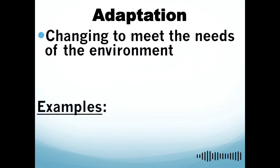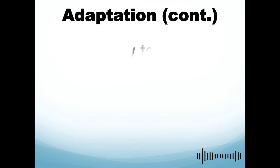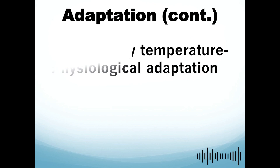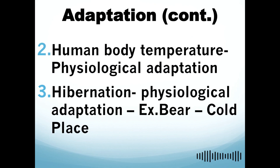The next characteristic is adaptation — changing to meet the needs of the environment. One example is bird migration, which is a behavioral adaptation. Another is human body temperature regulation, which is a physiological adaptation. The third example is hibernation, also a physiological adaptation.